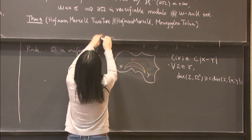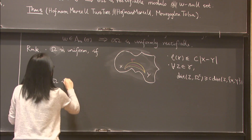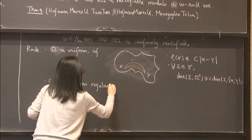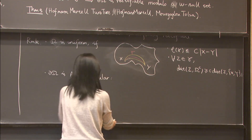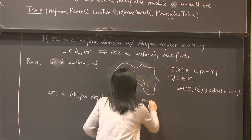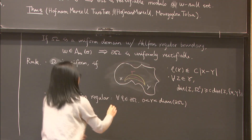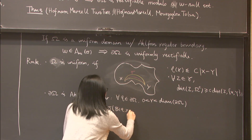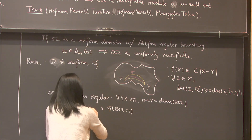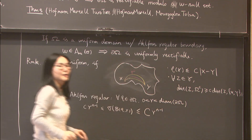This corresponds to the connectedness assumption in the qualitative result. We say the boundary is Ahlfors regular if for any boundary point and any radius r, the surface measure of the ball of radius r is equivalent to r^(n−1) — bounded below by a constant times r^(n−1) and above by a larger constant times r^(n−1).